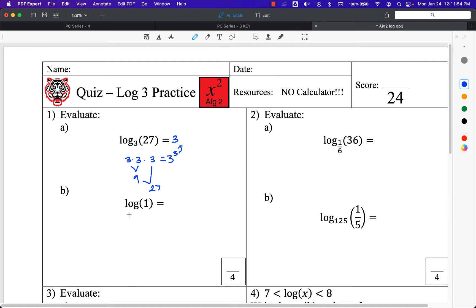And this one. This is essentially asking log base 10 of 1. Whenever I don't have a base, you assume it's base 10. This is asking 10 to the what power gives you 1? Well, anything to the power of 0 gives you 1. So the answer here is 0.